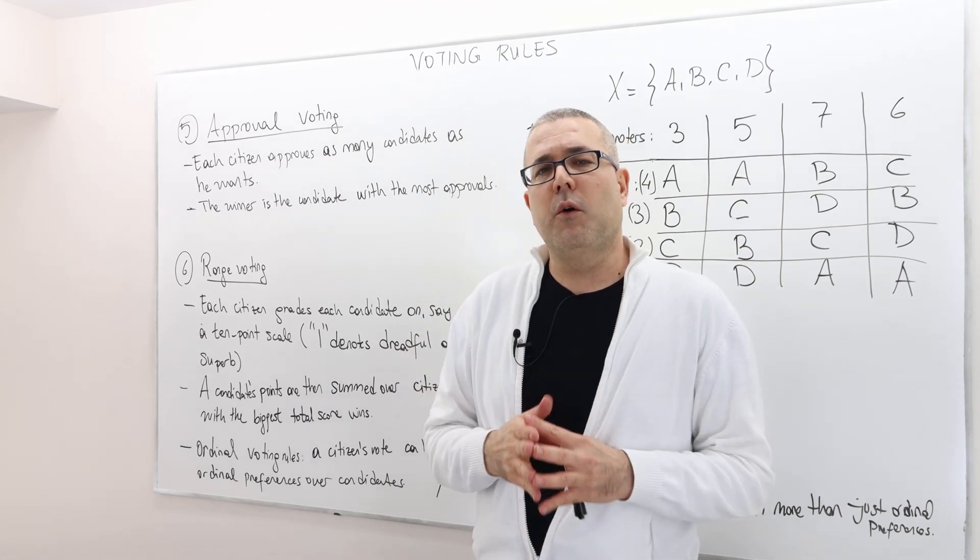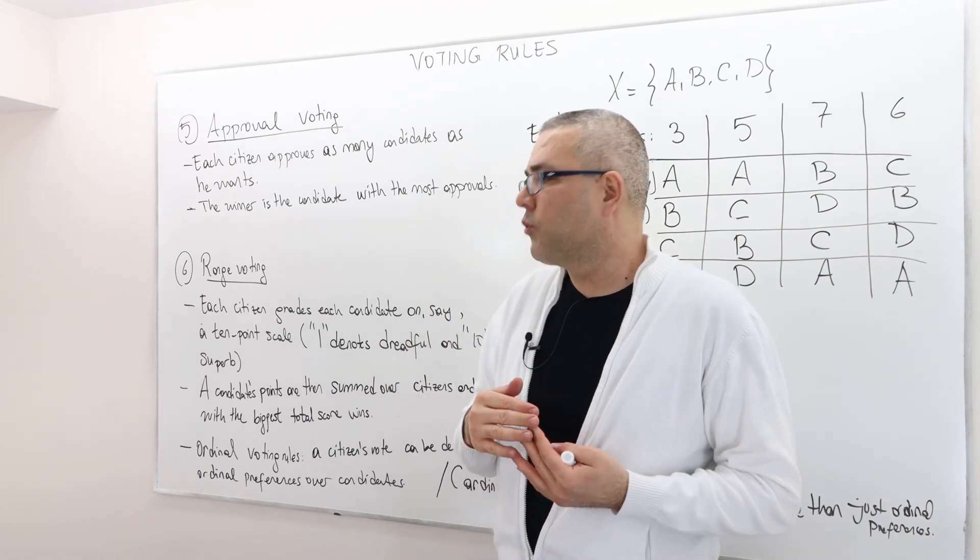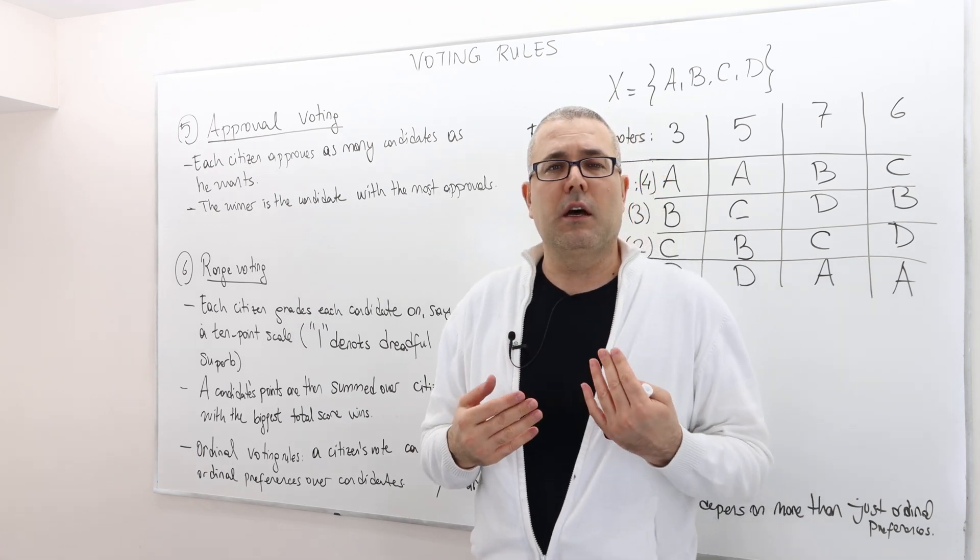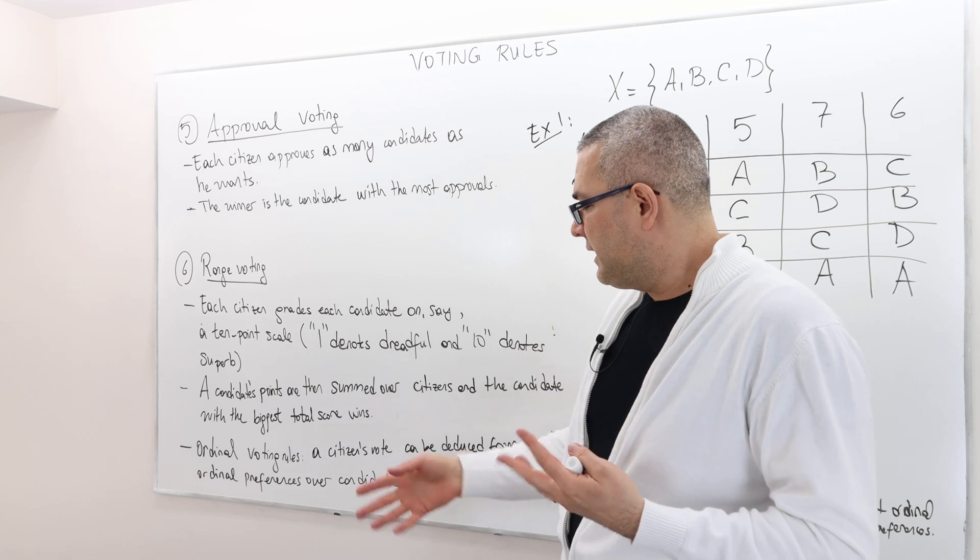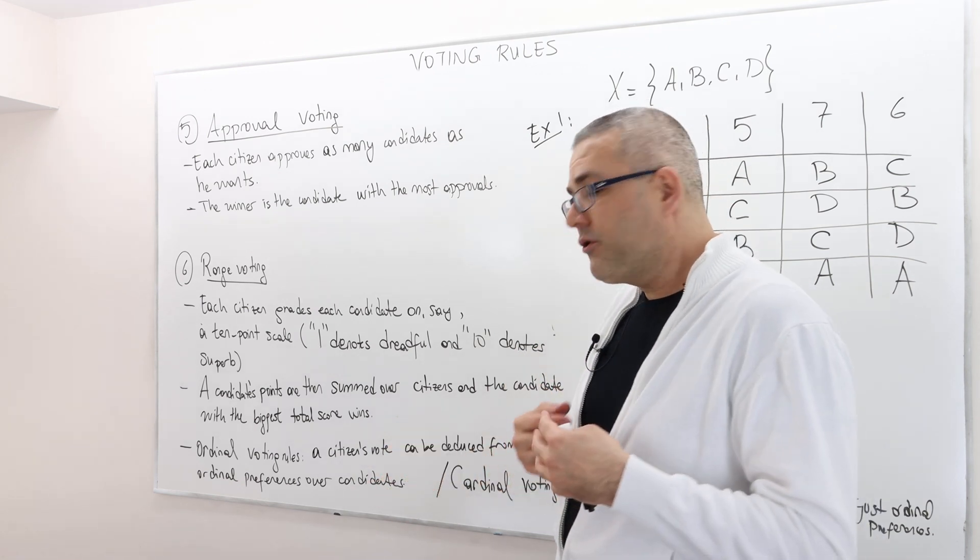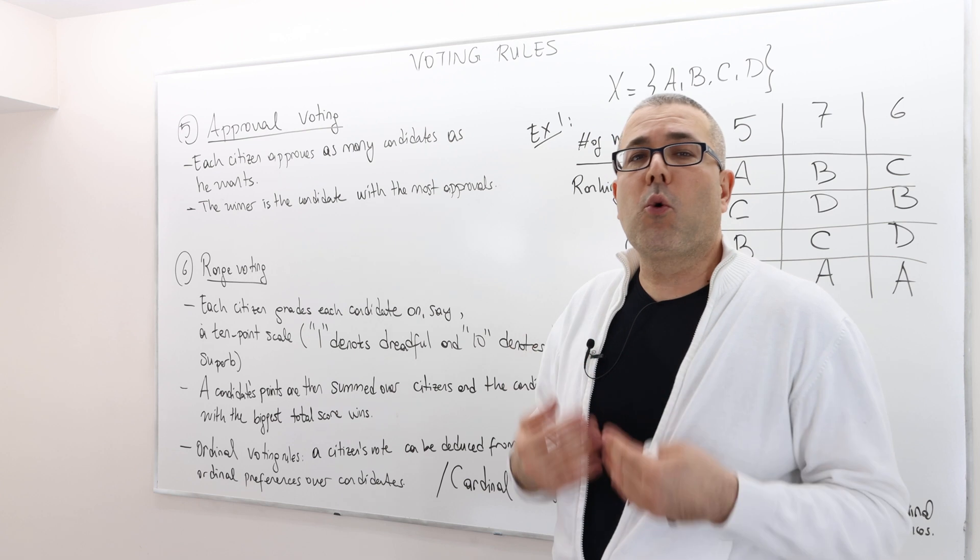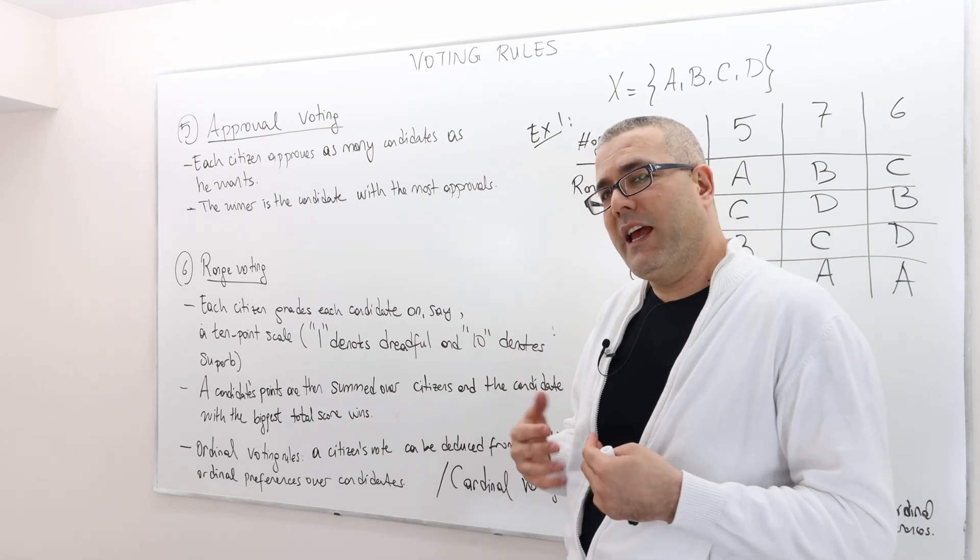Up until this point, all the voting rules that we discussed were ordinal voting rules. Well, what does that mean? That means a citizen's vote can actually be deduced from his or her ordinal preferences over the candidates.